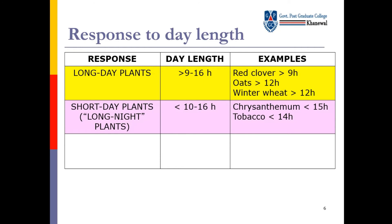Short day plants — ان کو long night plants بھی بولتے ہیں. ان کی day length اگر ہم بات کریں تو 10 to 16 hours سے کم ہوگی. Examples: chrysanthemum, tobacco.